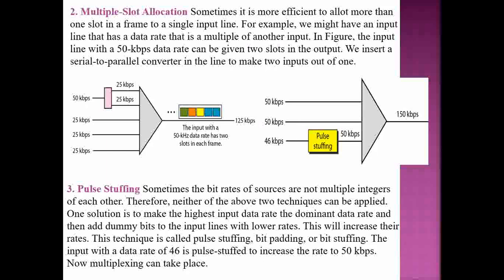One solution to non-multiple data rates is to make the highest input data rate the dominant rate and add dummy bits to input lines with lower rates to increase their rates. This technique is called pulse stuffing, bit padding, or bit stuffing — adding additional bits to make it complete. For example, an input with a data rate of 46 kilobits per second is pulse-stuffed to increase its rate to 50 kilobits per second, allowing multiplexing to take place without difficulties.